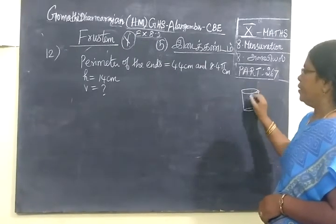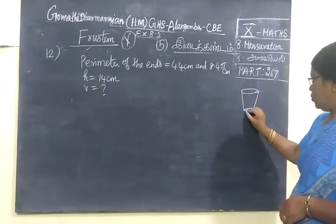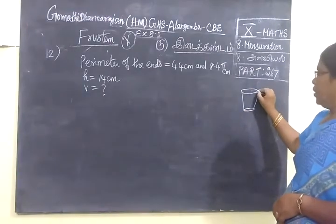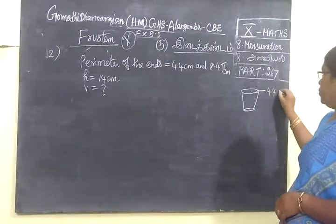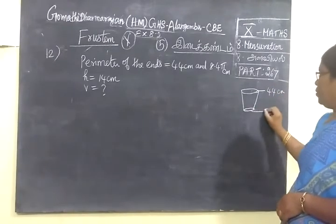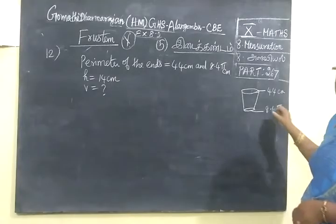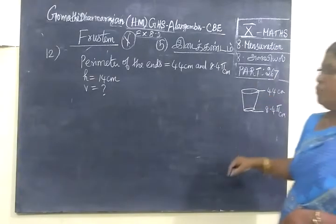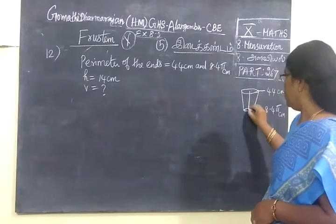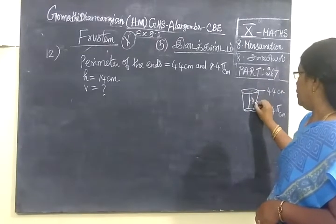Perimeter of the ends is given. The perimeter is 44 cm and 8.45 cm. The height is also given. The height is 14 cm.